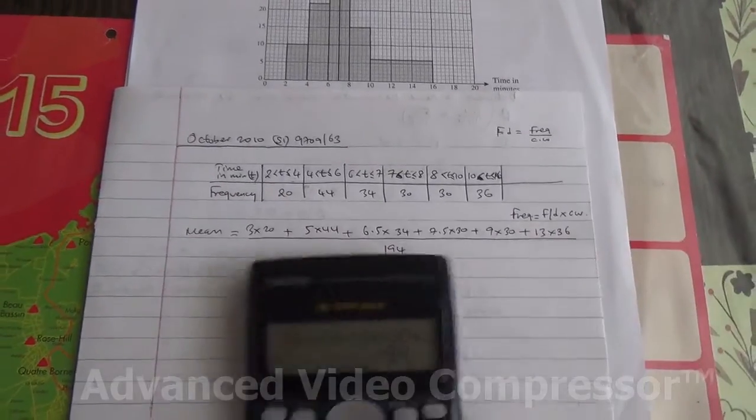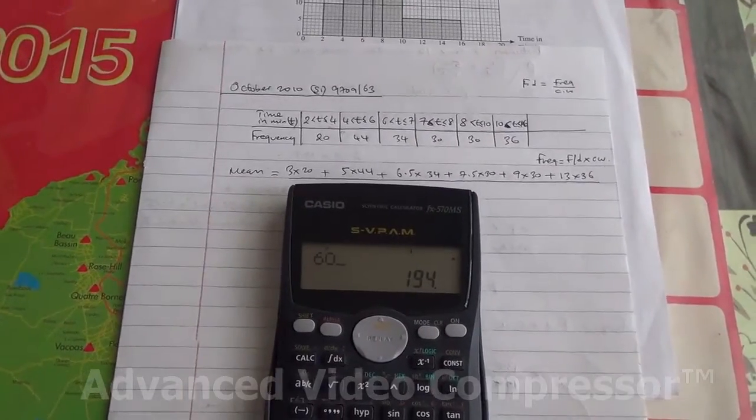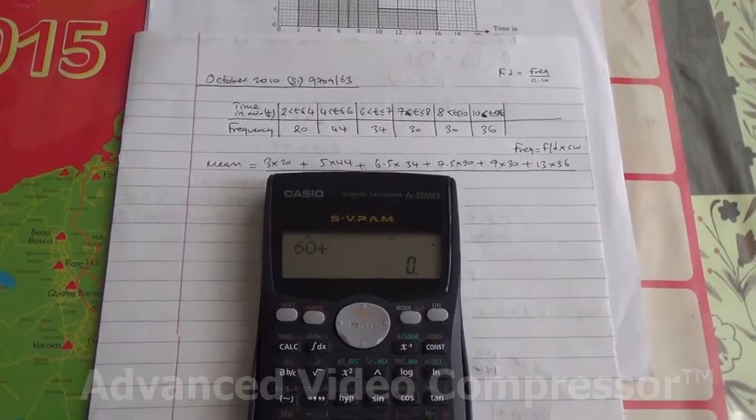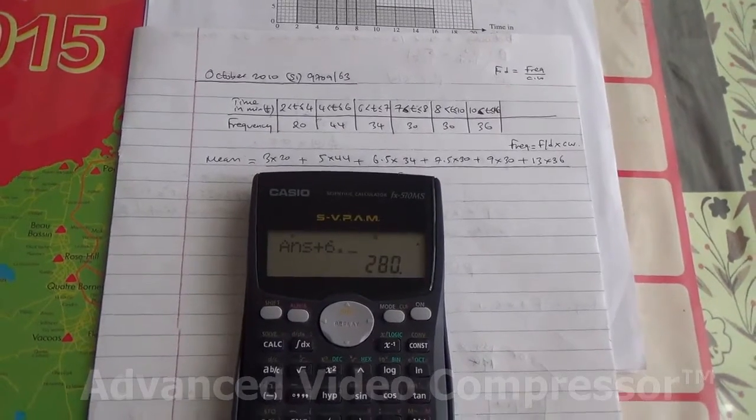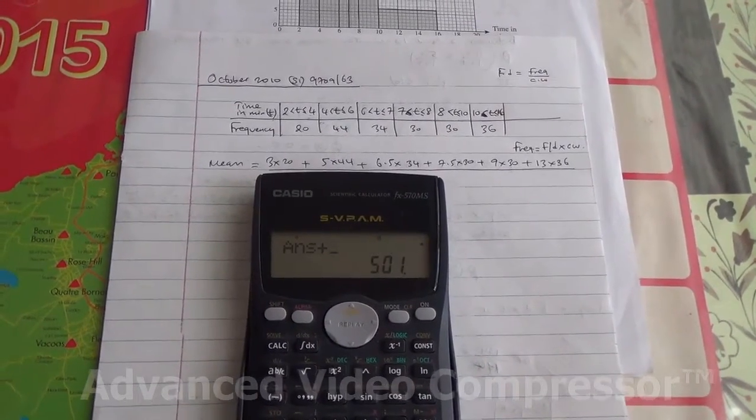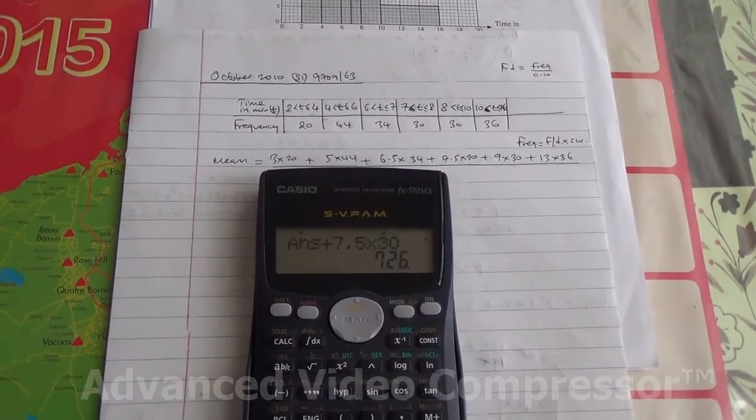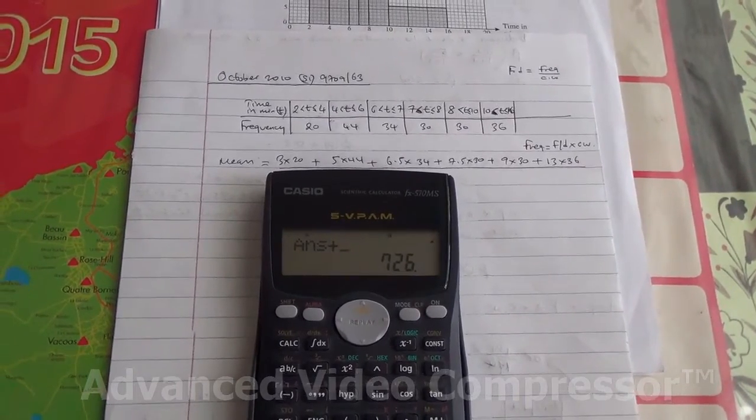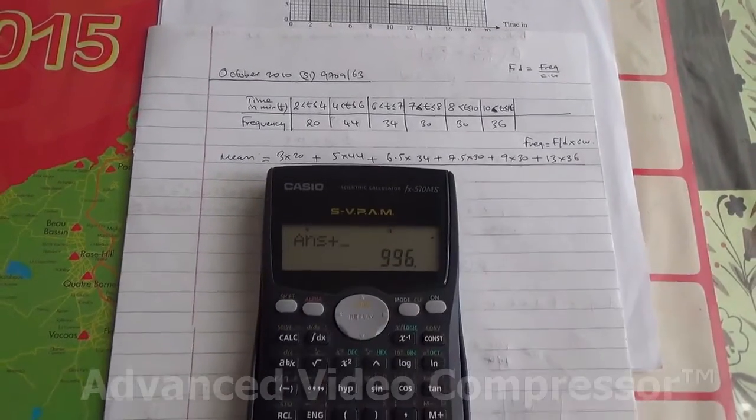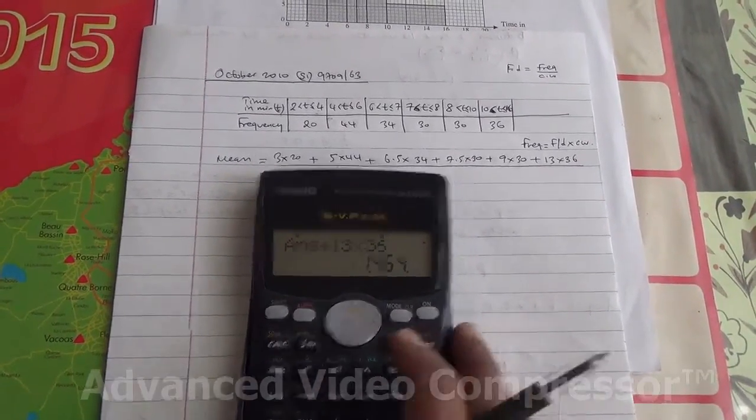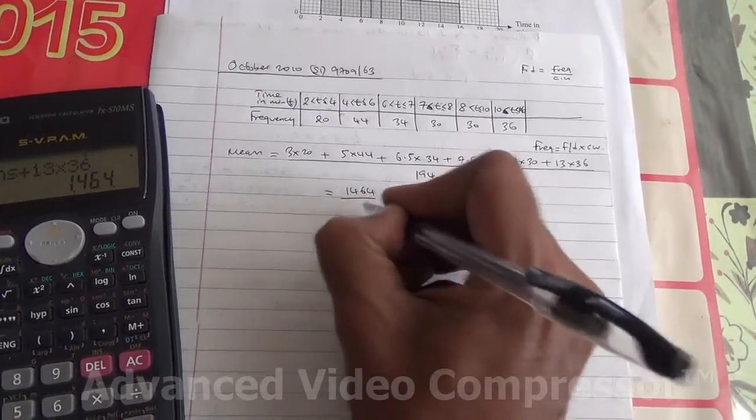We're going to do all of that. 3 times 20 is 60. So I've got 60 plus 5 times 44 plus 6.5 times 34 plus 7.5 times 30 plus 9 times 30 is 270, plus 13 times 36, divide by 194.